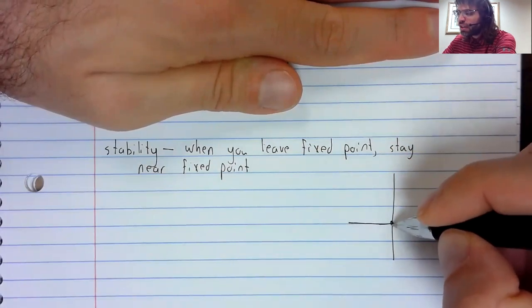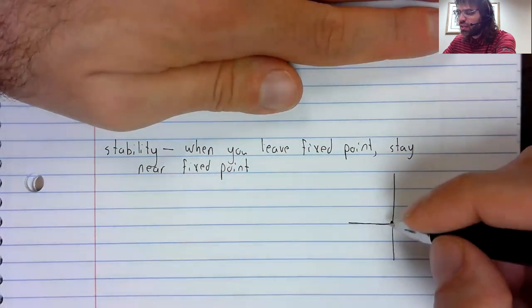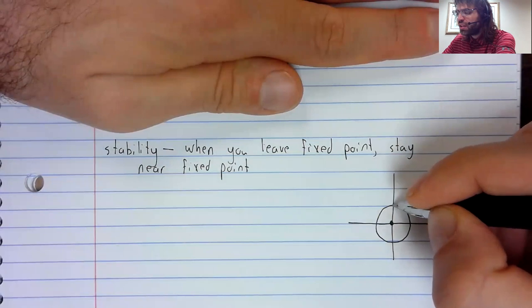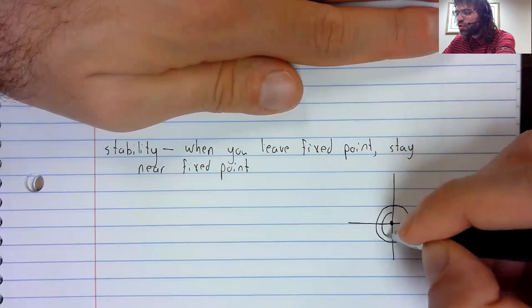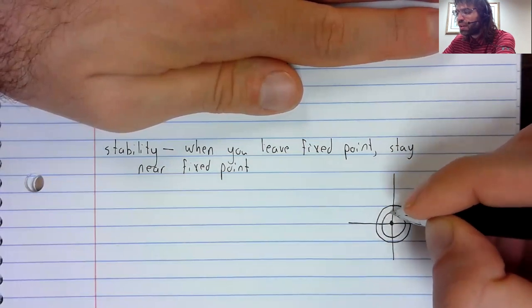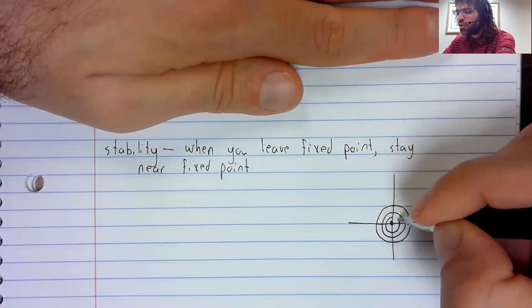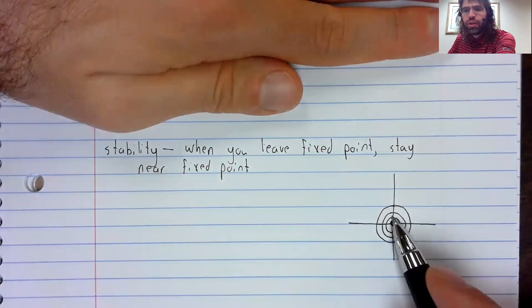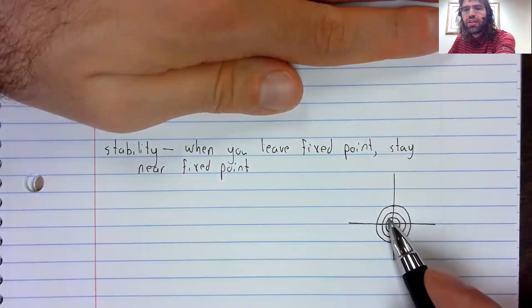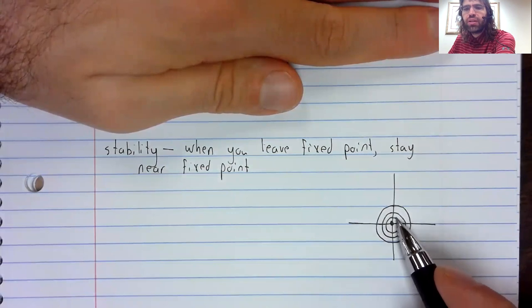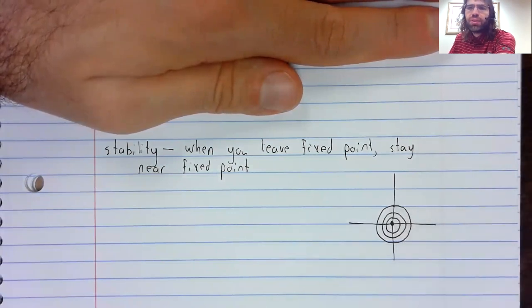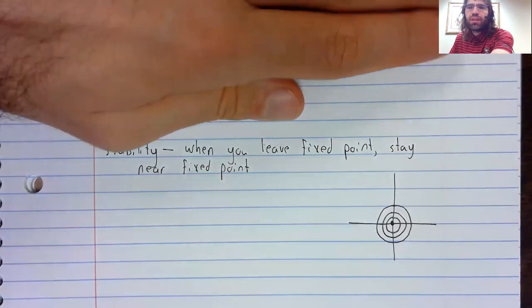And maybe, for example, the origin is a fixed point. And as time passes, trajectories orbit the origin. So if you get knocked off the fixed point, you then stay near the fixed point forever, but you don't converge back to it. This would be the main example of stability.